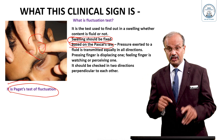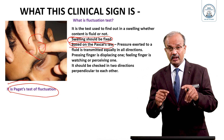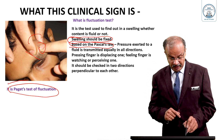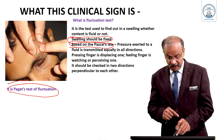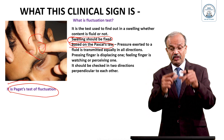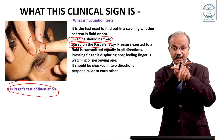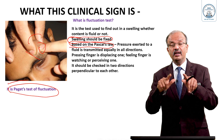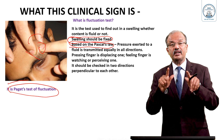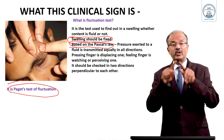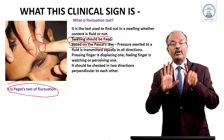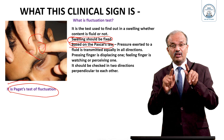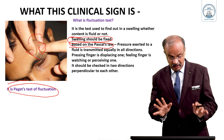The pressing finger is called the displacing one. The feeling finger is called the watching or perceiving one. Fluctuation should be checked in two directions. Standard fluctuation should be checked in two directions perpendicular to each other — this is very very important, not in just one direction. All these points you have to remember when you elicit fluctuation.